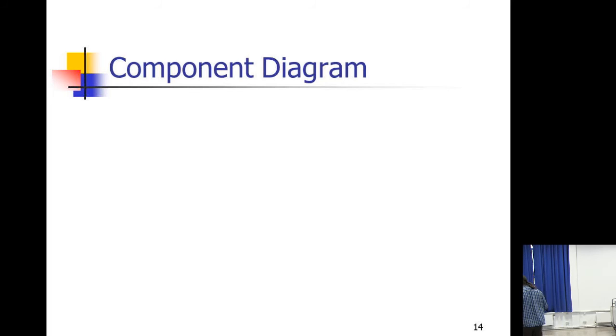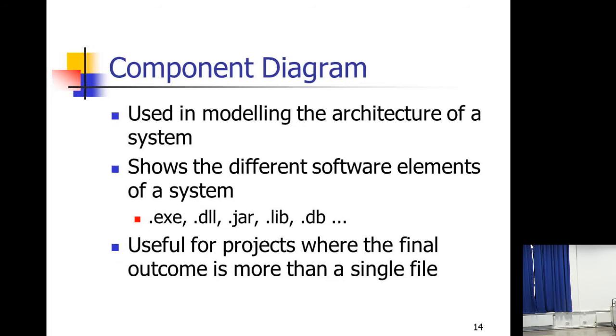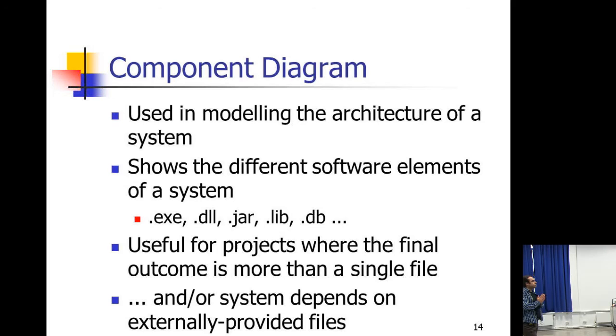Now I'm going to talk about some diagrams I haven't talked much about — which might be important and useful in a final year project to represent different aspects. One is the component diagram — a useful diagram to represent the architecture of the system. This is something most students forget about. You may focus too much on functional requirements or the class diagram, but what you may lack is an overall view of what's happening in your system.